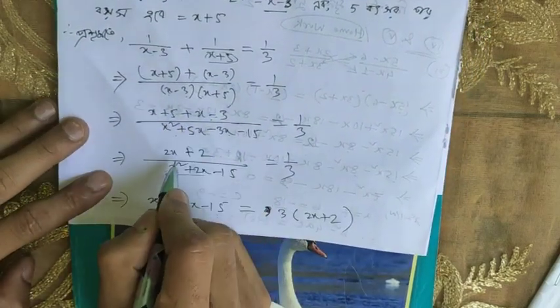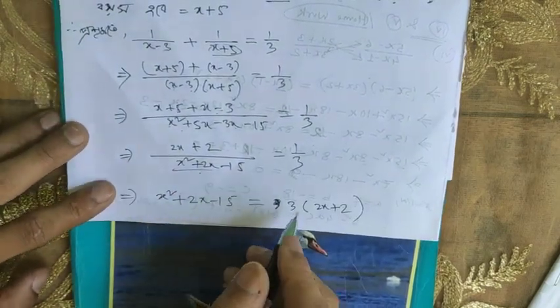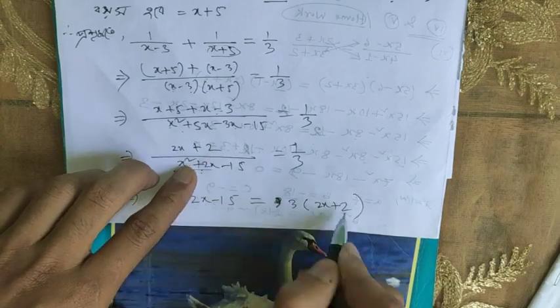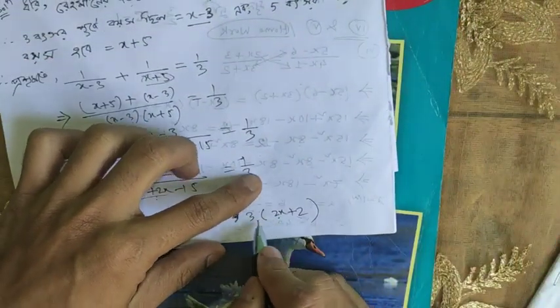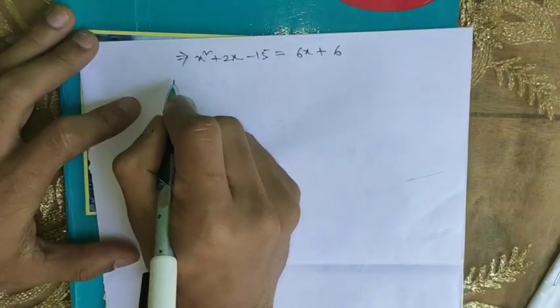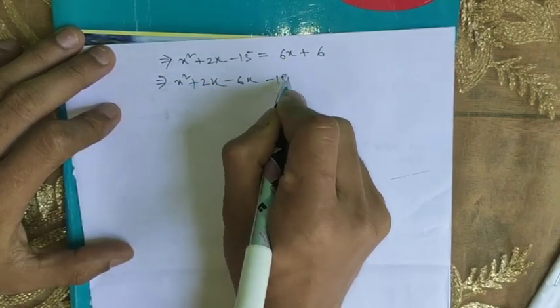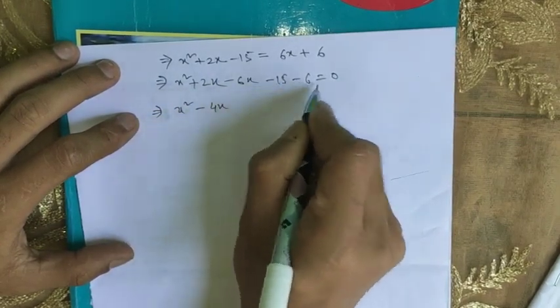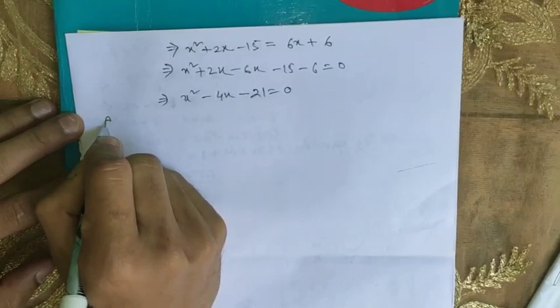We have 5x minus 3 divided by (x minus 2) minus 15 equal to 1 by 3x. With a equals 2, cross-multiplying: 6x minus 15 minus 6 equal to 0, giving x squared minus 4x plus 21 equal to 0.